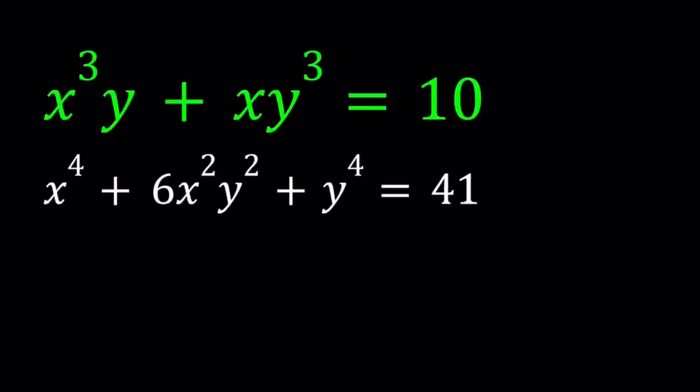Hello everyone. In this video we're going to be solving a homemade, fresh from the oven, polynomial system. So we have x³y + xy³ = 10, and x⁴ + 6x²y² + y⁴ = 41. We're going to be solving this system in two different ways.